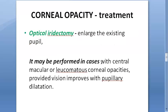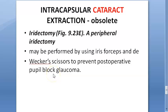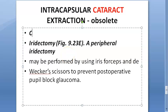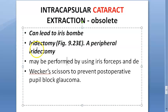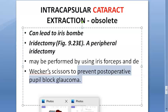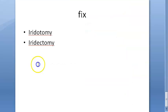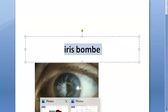Whenever intracapsular cataract extraction (ICCE) is performed, because it can lead to iris bombay and pupillary block, an iridectomy is routinely done along with the ICCE surgery to prevent post-operative pupil block. So in this video we looked at iris bombay — its mechanism, causes (anterior uveitis and ICCE), and treatment (iridotomy/iridectomy).